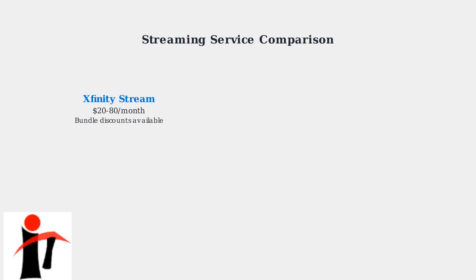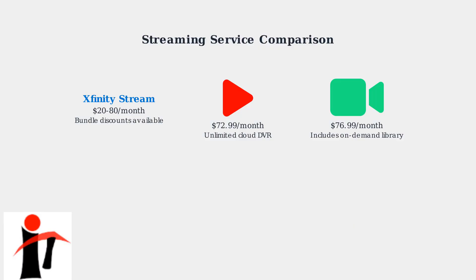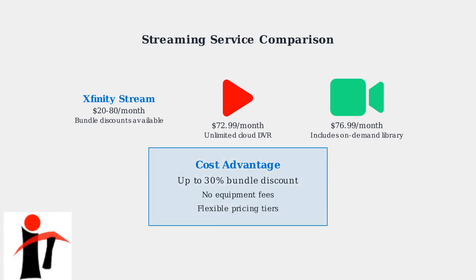Xfinity Stream competes directly with other streaming services in the market. It competes with major services like YouTube TV and Hulu Plus Live TV, each offering live television streaming with different features and pricing. YouTube TV offers live television streaming at $72.99 per month with access to major networks and unlimited cloud DVR storage. Hulu Plus Live TV costs $76.99 per month and combines live television with Hulu's extensive on-demand library. Xfinity Stream offers significant cost advantages, especially for existing Xfinity Internet customers who can receive bundled discounts of up to 30%, making it a cost-effective solution for many households.